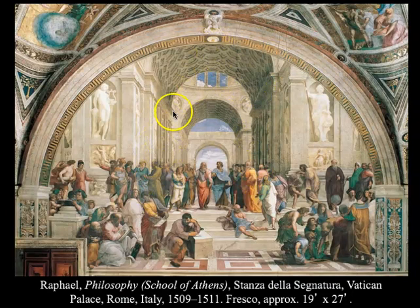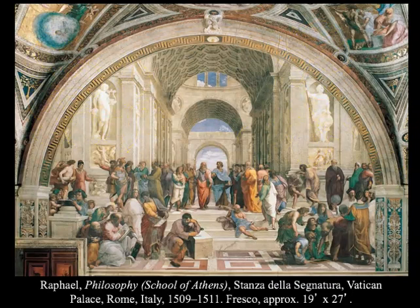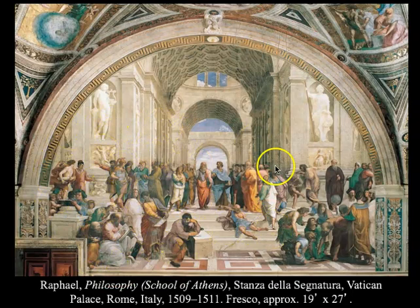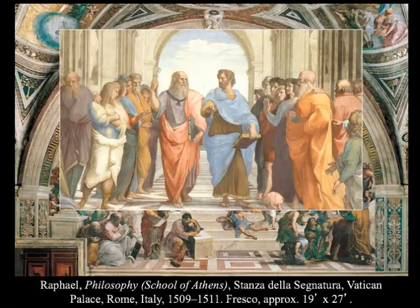In this painting, there are all these different groups of figures well known for something in philosophy or mathematics. The two most important are at the center: Plato and Aristotle. On Plato's side you have philosophers concerned with the ultimate mysteries that transcend the world, and on Aristotle's side, philosophers and scientists concerned with nature and human affairs. Plato is on the left with Aristotle on the right.